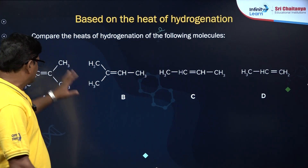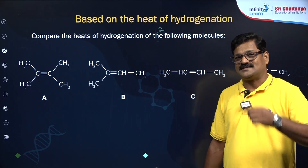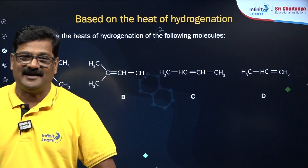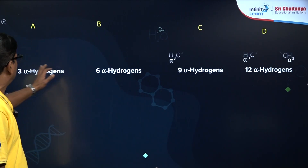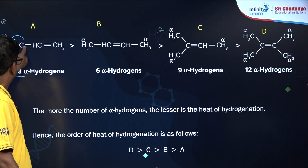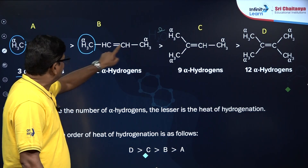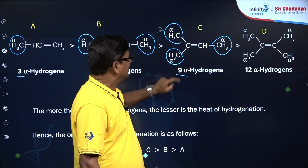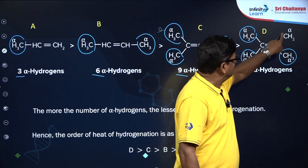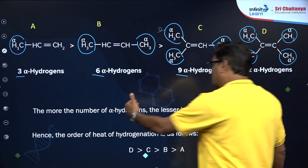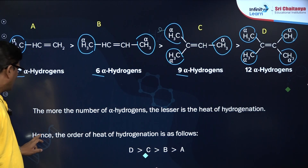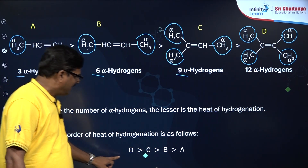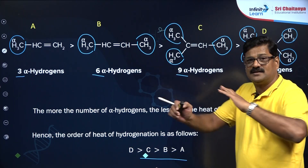To compare heat of hydrogenation for structures A, B, C, D: simply count the alpha hydrogens. Structure A has 3 alpha hydrogens, structure B has 6, structure C has 9, structure D has 12 alpha hydrogens. Since more alpha hydrogens means lesser heat of hydrogenation, the order is: D < C < B < A for stability, and heat of hydrogenation order is D > C > B > A.